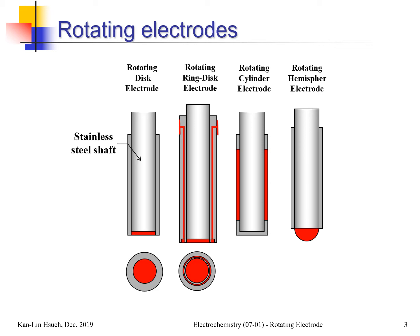Inside the rotating disk electrode is a stainless steel shaft that conducts electric current from the electrode itself to the outside device. The outside is a Teflon insulation, and then there is the disk electrode. The disk electrode material — depending on the custom order — can be platinum, gold, graphite, or all kinds of things.